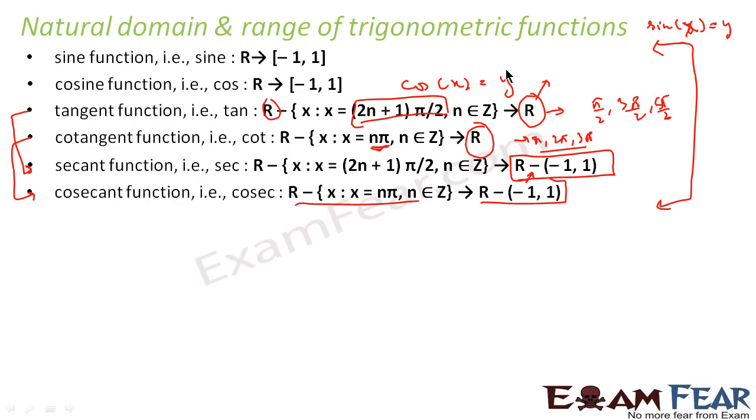Natural domain and range for trigonometry functions are as below. For sin, it can take any real number in this x part. But the output will always be minus 1 to 1. Because that's how the sin graph is, right? So maximum value is 1 and minimum value is minus 1. For cos also, similar thing.